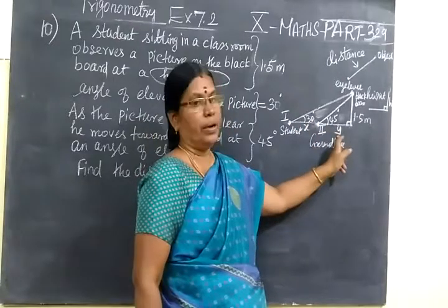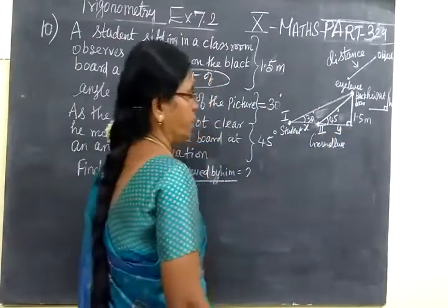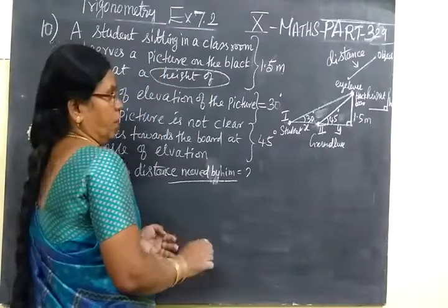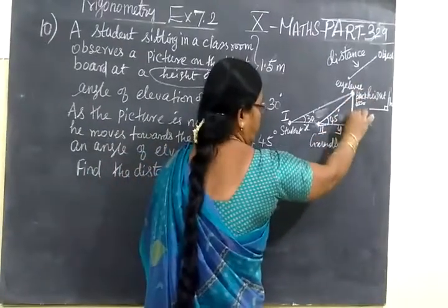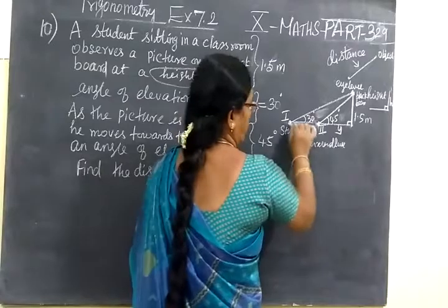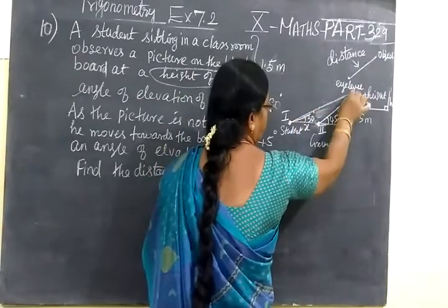Smaller number to greater number. That is very very important. And the height means it refers to this only. And the distance means it refers to this line.